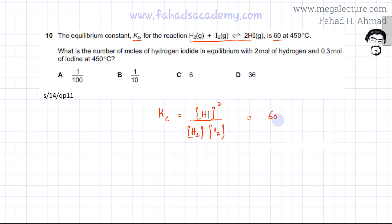We already know the value of Kc which is 60. The moles of HI need to be found out. The moles of hydrogen are given, so it's going to be HI squared divided by 2, that's the moles of hydrogen. The moles of iodine are also given, 0.3 moles of iodine, so that's 0.3, and this is equal to 60.